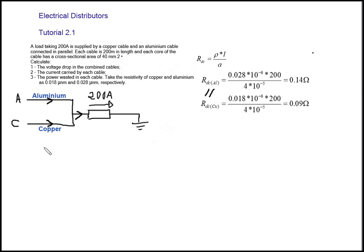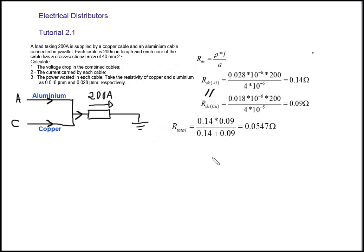Now that we have the resistance of each cable, the next step is to find the total resistance of the combined cable, since we need the voltage drop of the combined cable. We can use the current divider rule once we have each cable's resistance, but we still need the total parallel resistance. Combining aluminum and copper in parallel gives R_total = 0.0547 Ω.